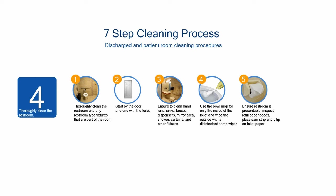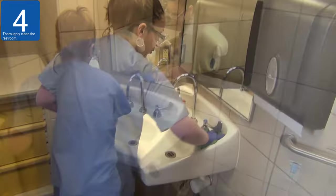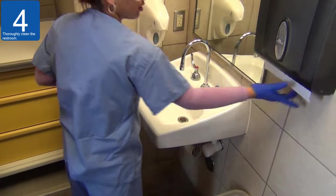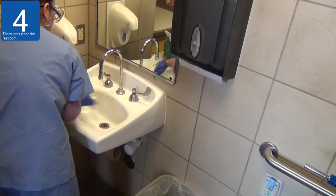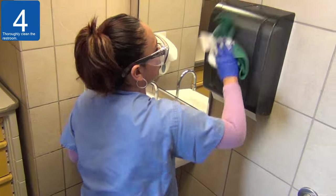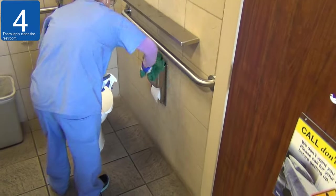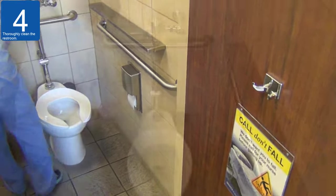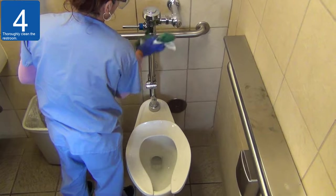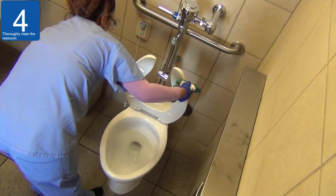Step 4: Thoroughly clean the restroom. Thoroughly clean the restroom and any restroom-type fixtures that are part of the room using the EVS restroom cleaning procedure. Start by the door and end with the toilet. Use the bowl mop only for the inside of the toilet and wipe the outside with a disinfectant damp wiper. Do not use the cleaning wiper on any surface after cleaning the toilet.